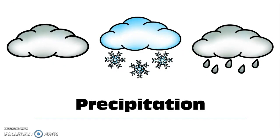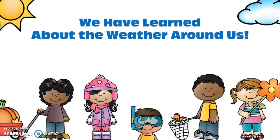Speaking of rain, I would like to discuss a very important vocabulary word. This word is precipitation. Precipitation occurs when anything wet falls from the clouds above. This includes rain, hail, and snow. We have now learned about the weather all around us.